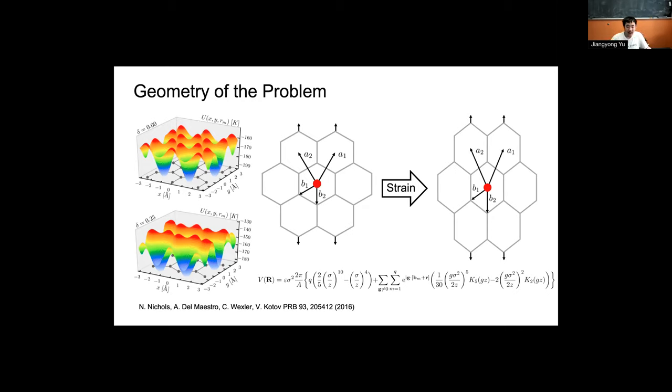So we're thinking, okay, maybe if the potential barrier gets lower perpendicular to the direction of strain, maybe that will make particles more likely to flow in that direction and have superfluidity.